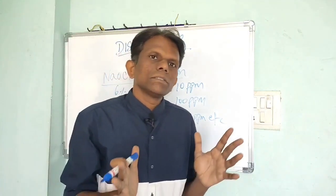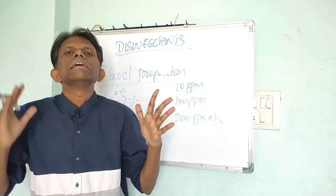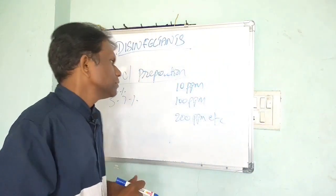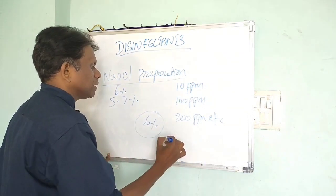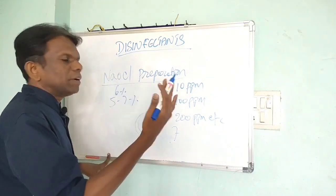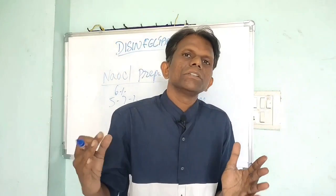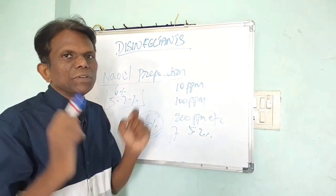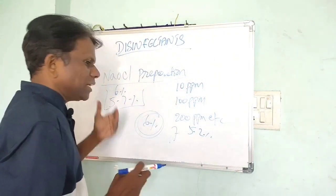Chlorine degrades over time. For example, if a supplier provides 6 percent chlorine solution and you keep it at room temperature in a closed lid for one week, the chlorine will gradually disintegrate into chlorides — dropping from 6 percent down to about 5.2 percent, approximately a 10 percent loss. Therefore, upon receipt of every lot we must estimate the available chlorine in sodium hypochlorite.